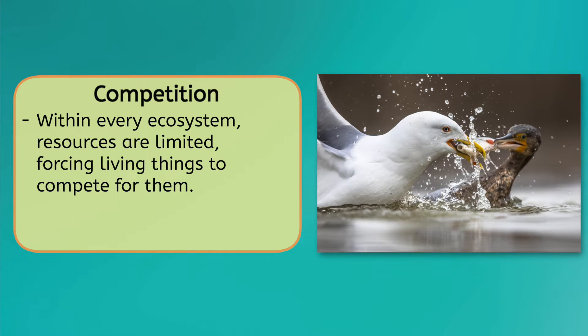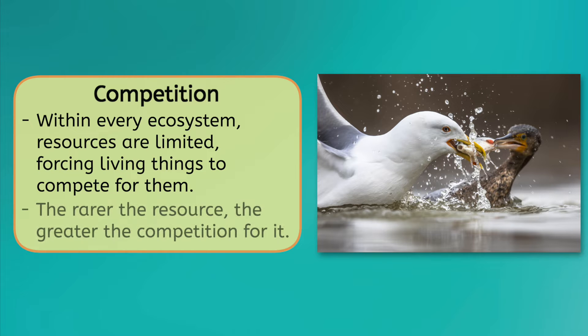In our previous lesson, we learned that living things are organized into communities, and that there are three main roles that living things play within their environment: producer, consumer, and decomposer. The question then becomes, how do these organisms interact with each other? To answer this, we need to understand how competition works between living things. Within every ecosystem, resources are limited, forcing living things to compete for them. The rarer the resource, the greater the competition for it.